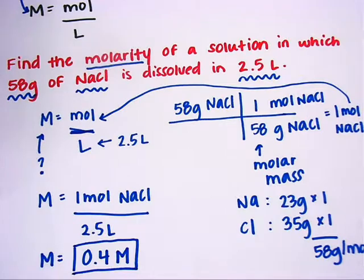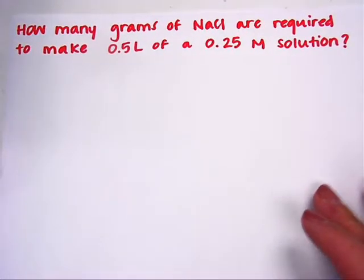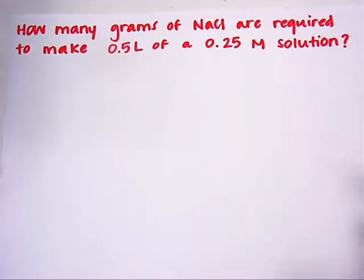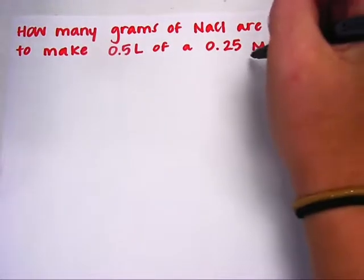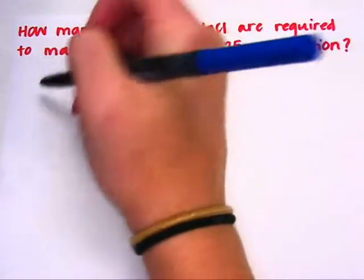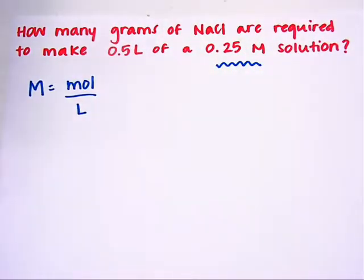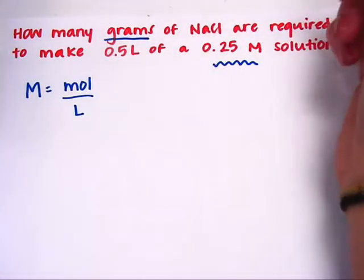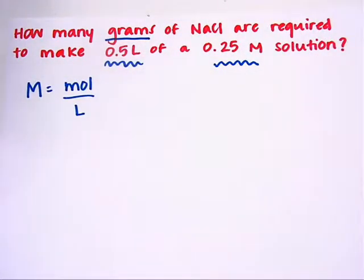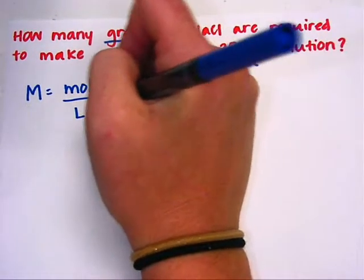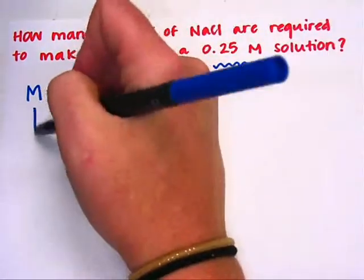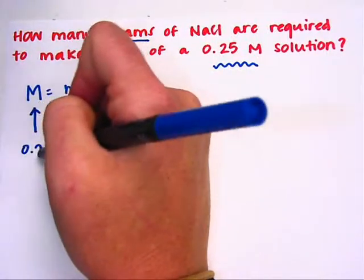We'll do another problem just to make sure you get the hang of it. This one is going to be a little bit different, and I'm going to solve it in two ways. The problem says: how many grams of NaCl are required to make 0.5 liters of a 0.25 molar solution? Since I see molarity here, I'll start by writing molarity equals moles divided by liters. The problem is asking for the number of grams, and I also have 0.5 liters.